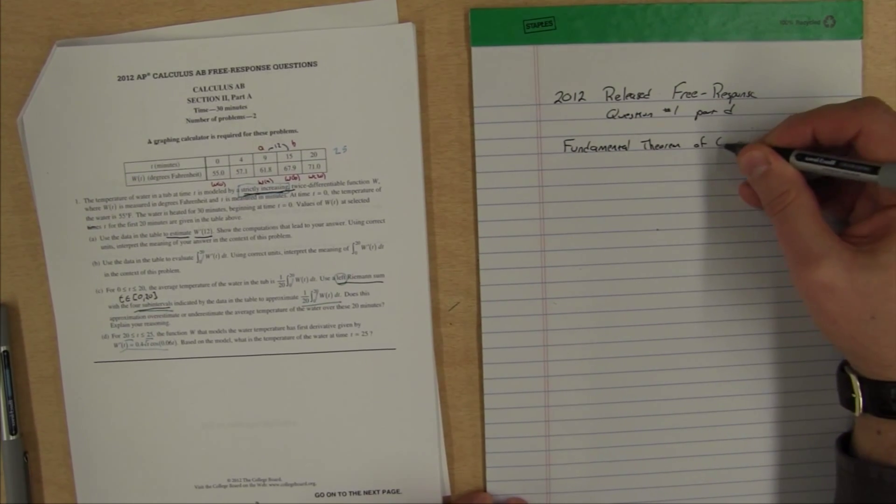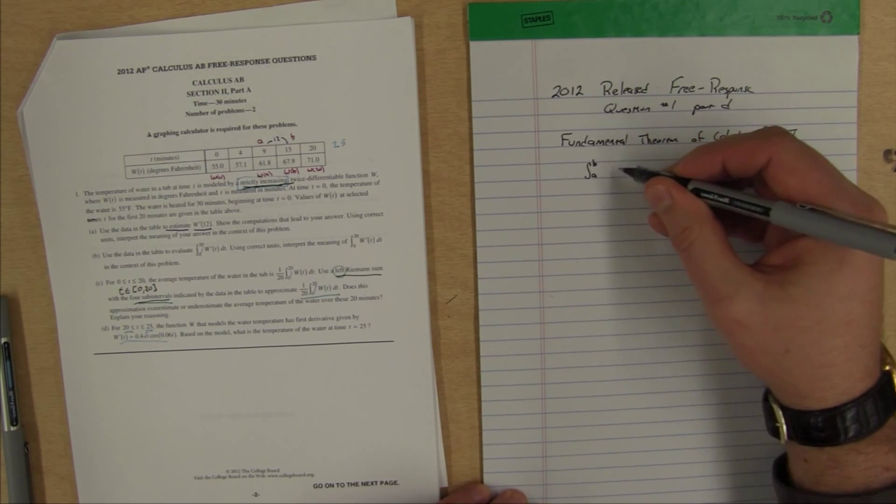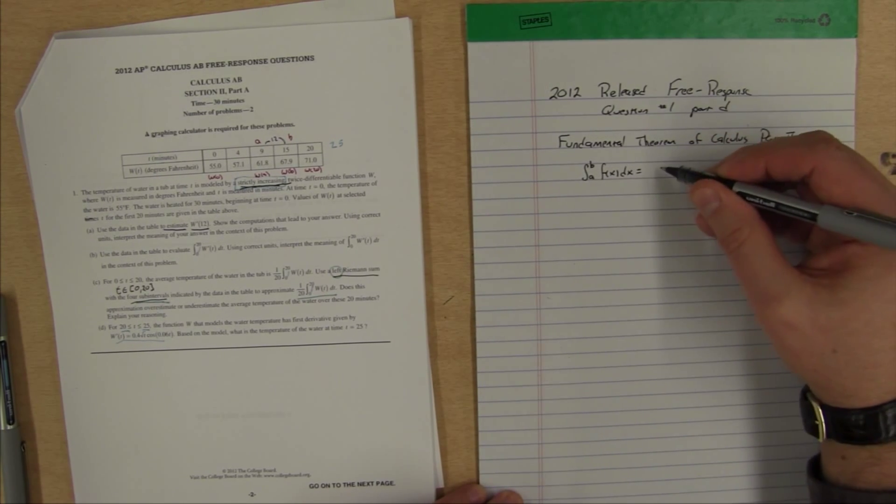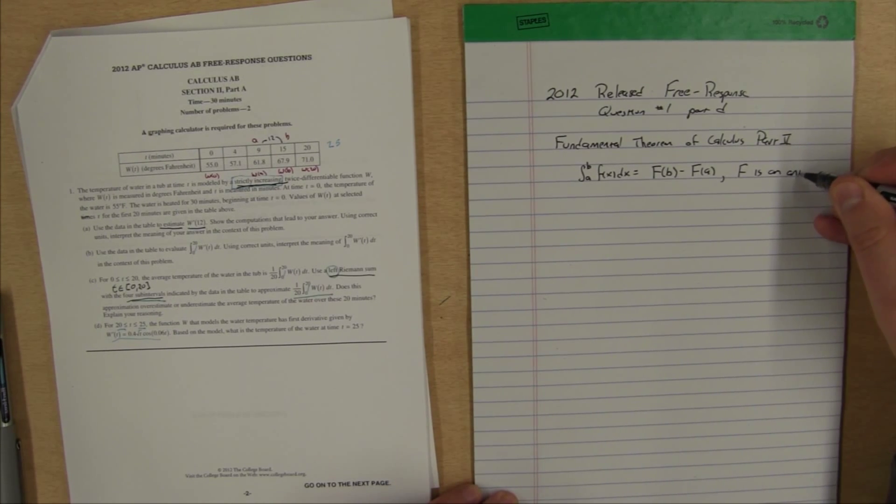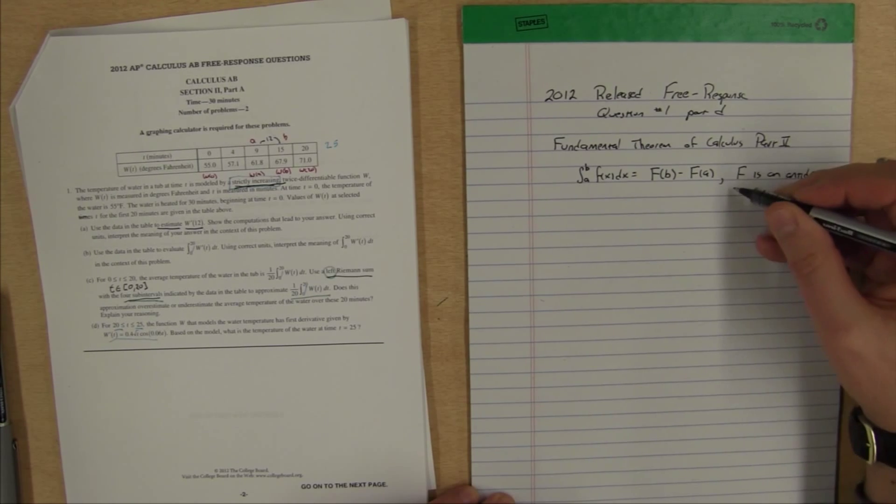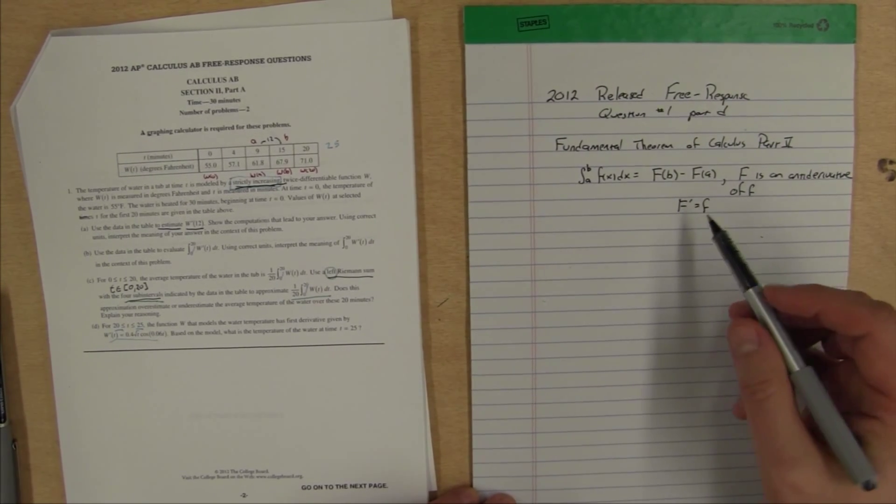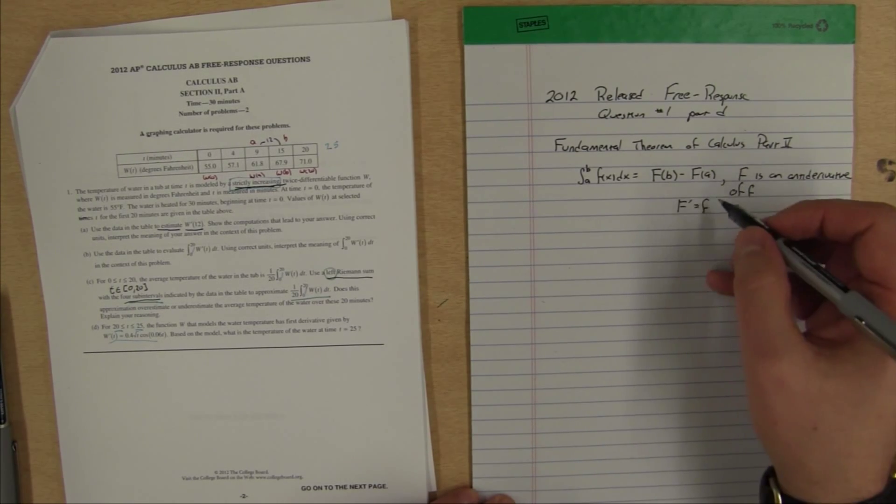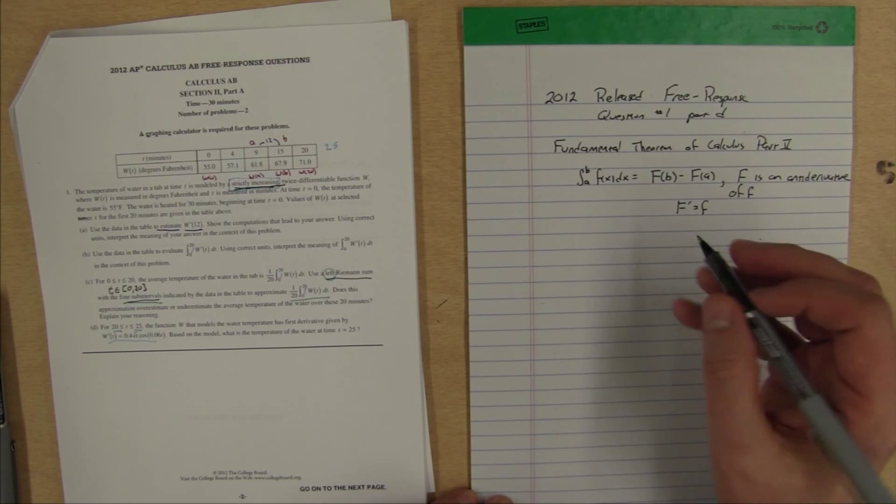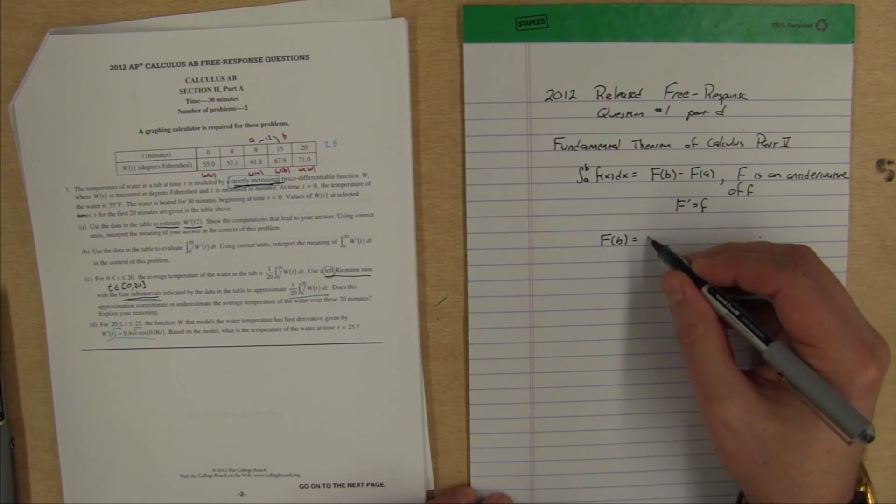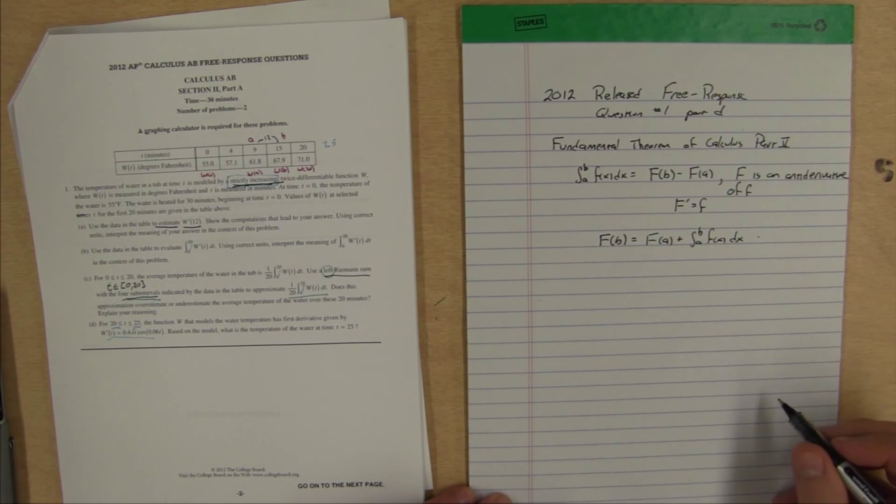The fundamental theorem of calculus part two says that the integral from A to B of f of x dx is equal to capital F of B minus capital F of A, where capital F is an anti-derivative of small f. Another way to say that is capital F prime equals small f. Now we're going to rearrange the terms on this a little bit. I could add F of A to both sides and switch the sides of the equation. What I would end up with is capital F of B equals capital F of A plus the integral from A to B of little f of x dx.